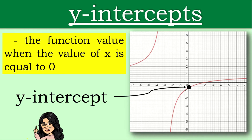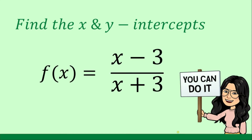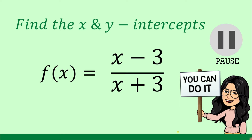Let's understand more as we look at some examples. Given f(x) is equal to x minus 3 over x plus 3, find the x and y-intercepts. You may pause this video and take your time in answering. Now to solve for this, let's be guided with these steps.